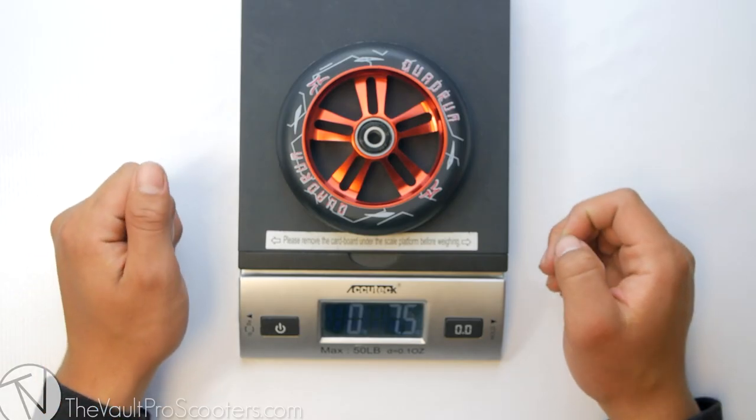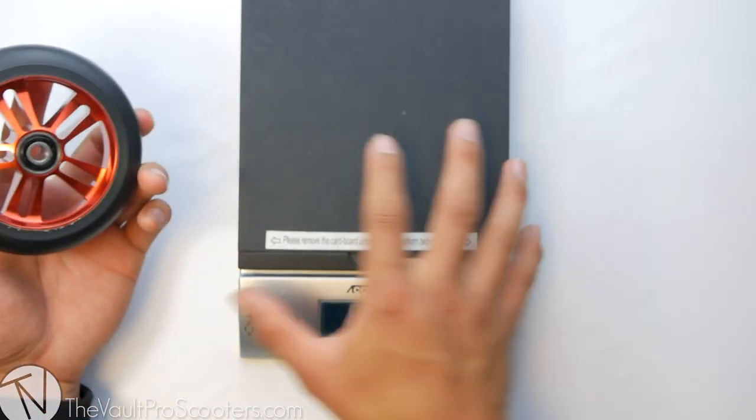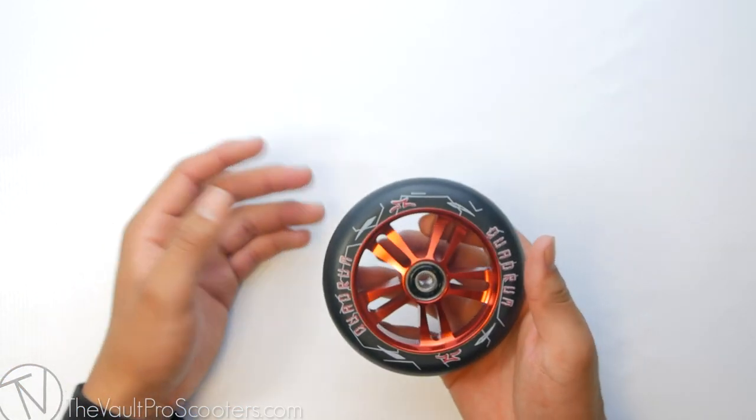Alright, so the AO Quadram wheel comes in at 7.5 ounces—really lightweight. It's gonna be really good for those street riders and park riders.